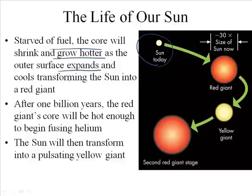Okay, so here's our sun. This is what happens. So once the fuel is used up, it will transform the sun into a red giant. It will shrink and grow hotter as the outer surface expands, and then eventually it will grow.